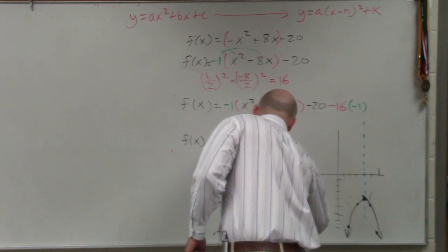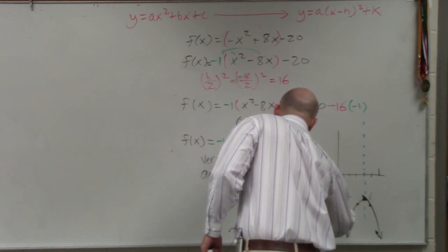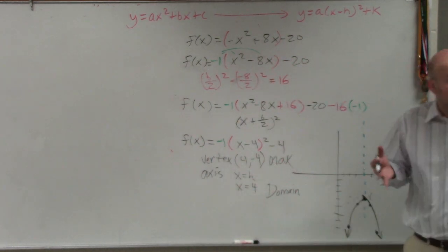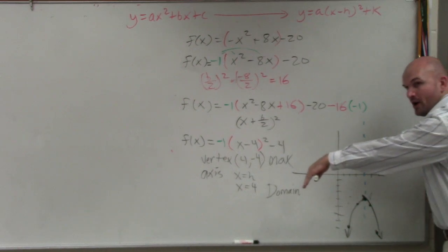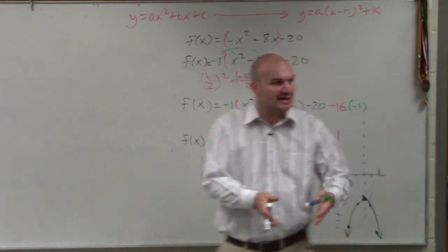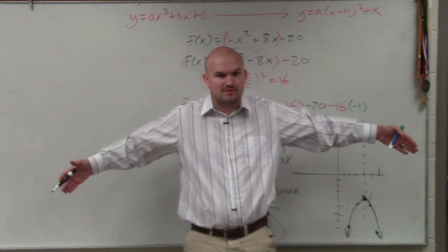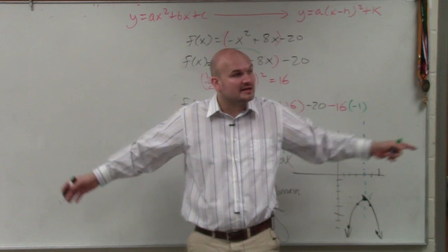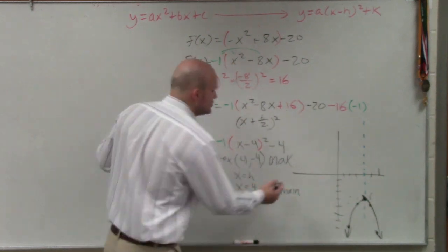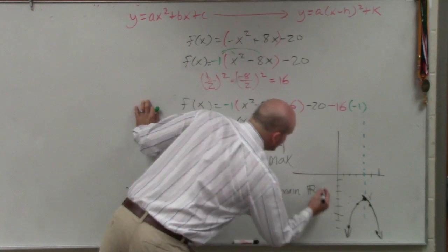The domain is the set of all x values, meaning all the x coordinates that make up this graph. So you can see, as this graph is going down, it's going to keep on getting wider and wider. Right? Is there any restrictions on how wide this graph is going to go? No. That means every number, every number you can think of, can be an x coordinate. So the domain is going to be all real numbers.